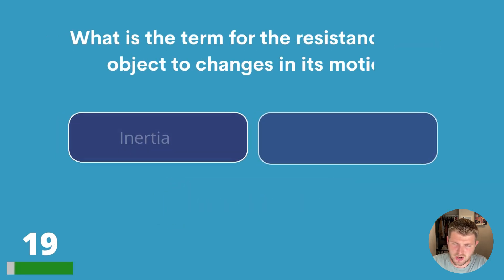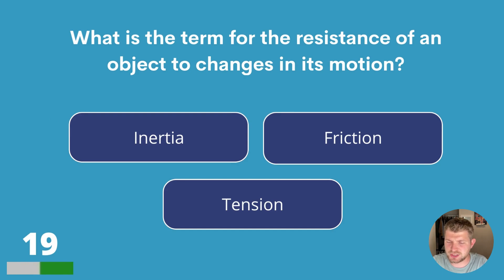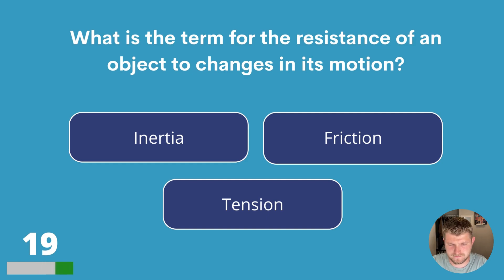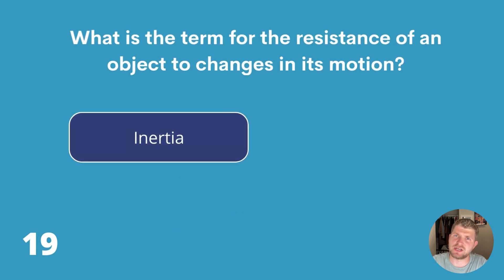Question nineteen. What is the term for the resistance of an object to changes in its motion? Inertia, friction or tension? The answer is inertia.